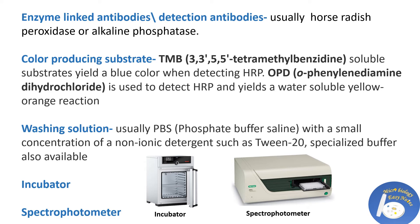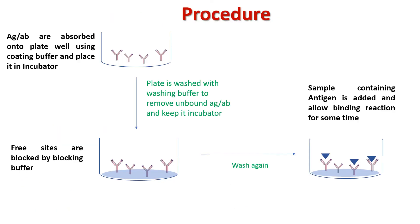An incubator and spectrophotometer are other devices used in ELISA. Now the procedure: in the first step, antibodies are absorbed onto the well plate using coating buffer. Coating buffer stabilizes the antibodies and maximizes their absorption. Keep this plate in the incubator for at least an hour — you have to standardize how long. Then wash the plate with washing buffer to remove any unbound antibodies.